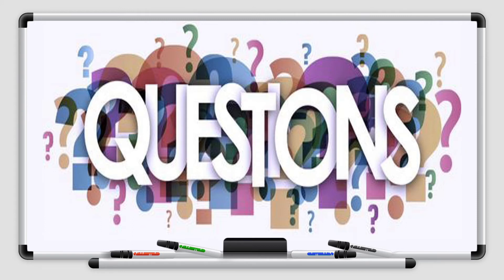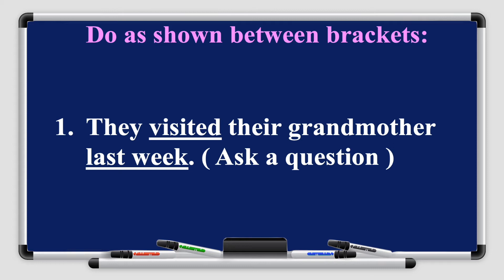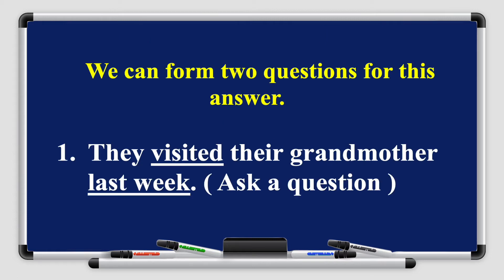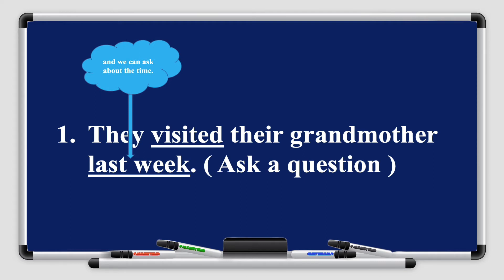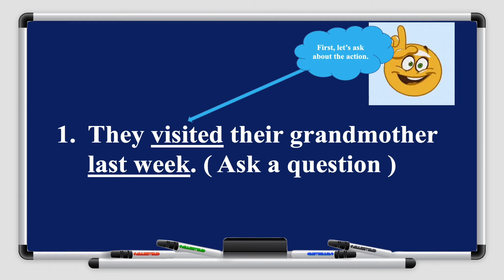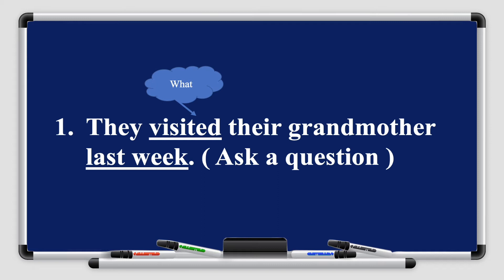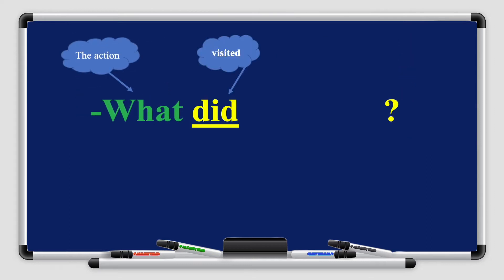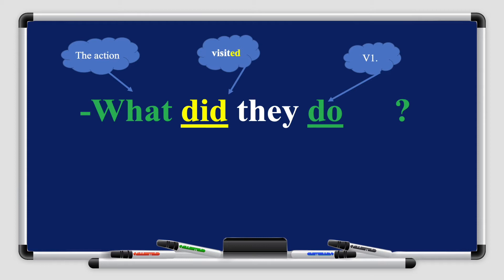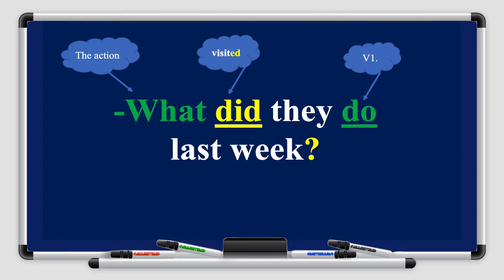Do as shown between brackets: 'They visited their grandmother last week' — ask a question. We can form two questions from this. We can ask about the action 'visited' or about the time 'last week.' First, let's ask about the action. The action is 'visited', so we're going to use 'what.' We use 'did' because the verb is in the past simple tense — not 'do' or 'does.' So: 'What did they do last week?' Don't forget the question mark.